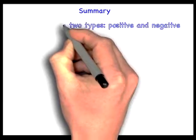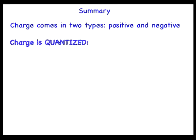In summary, up to this point we have learned the following about charges. First, charges come in two types, positive and negative. Next, charge is quantized.